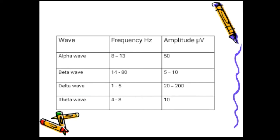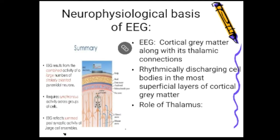Summary of wave characteristics: Alpha waves — frequency 8 to 13 Hz, amplitude 50 microvolts. Beta waves — frequency 14 to 80 Hz, amplitude 5 to 10 microvolts. Delta waves — frequency 1 to 5 Hz, amplitude 20 to 200 microvolts. Theta waves — frequency 4 to 8 Hz, amplitude 10 microvolts.